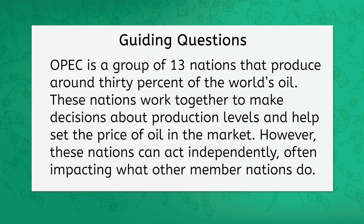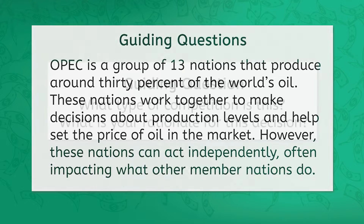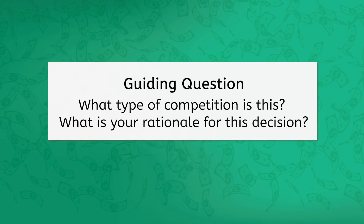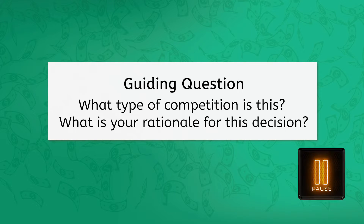Let's take a second to practice. OPEC is a group of 13 nations that produce around 30% of the world's oil. These nations work together to make decisions about production levels and help set the price of oil in the market. However, these nations can act independently, often impacting what other member nations do. What type of competition is this? What is your rationale for this decision?